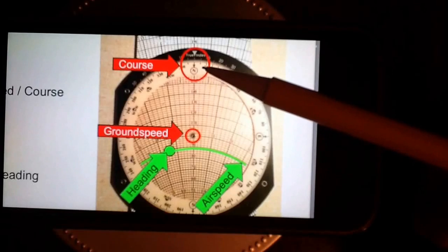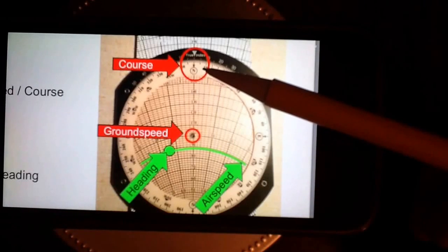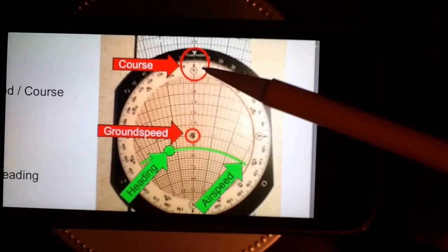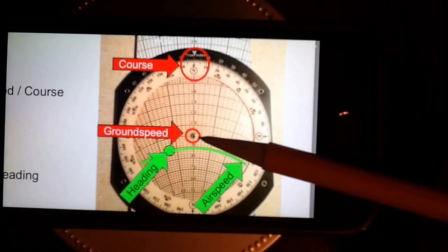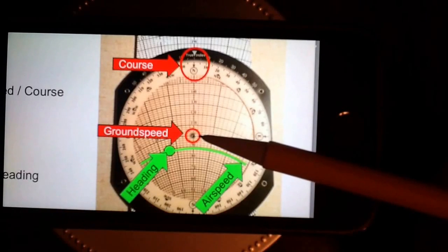This is the course it's actually flying over the ground, as represented perhaps by a line on a sectional. And this is the ground speed, the speed at which it is actually traveling over the ground.